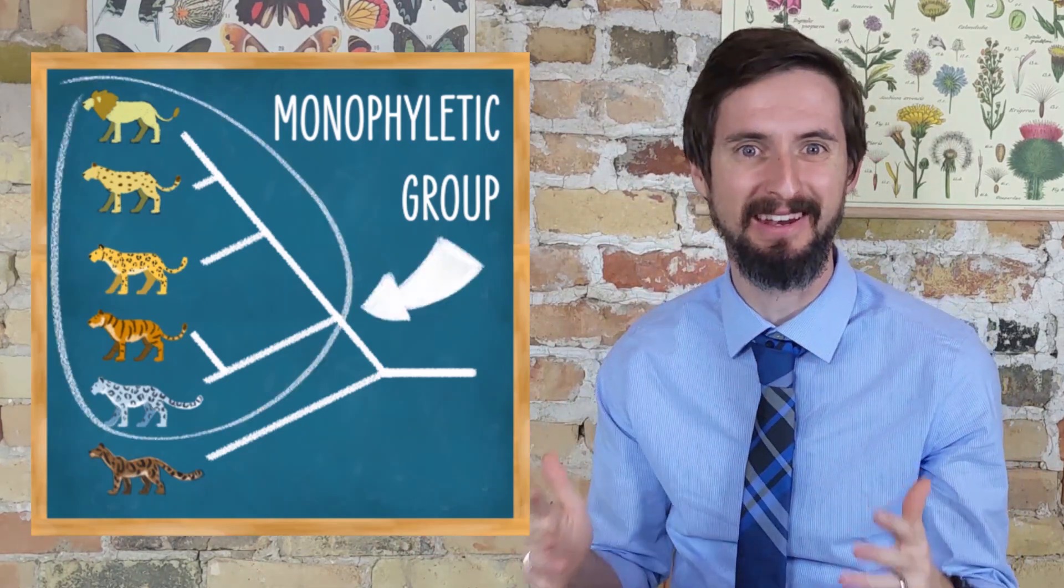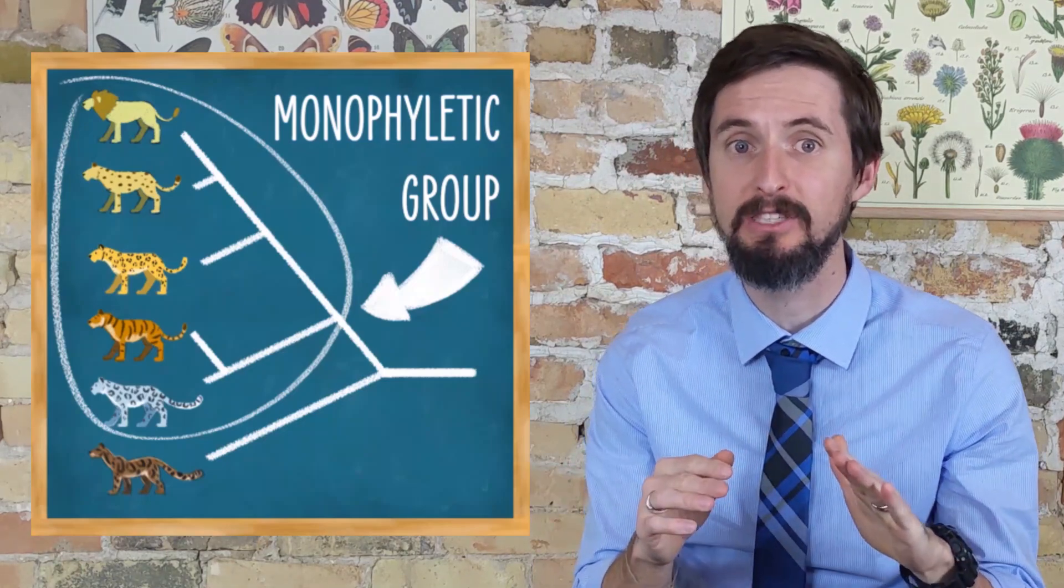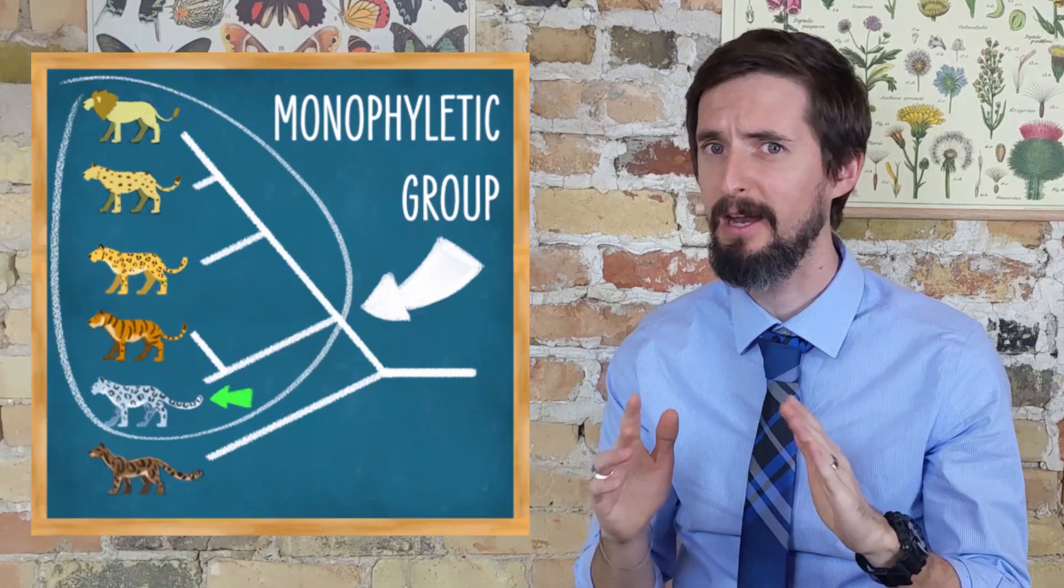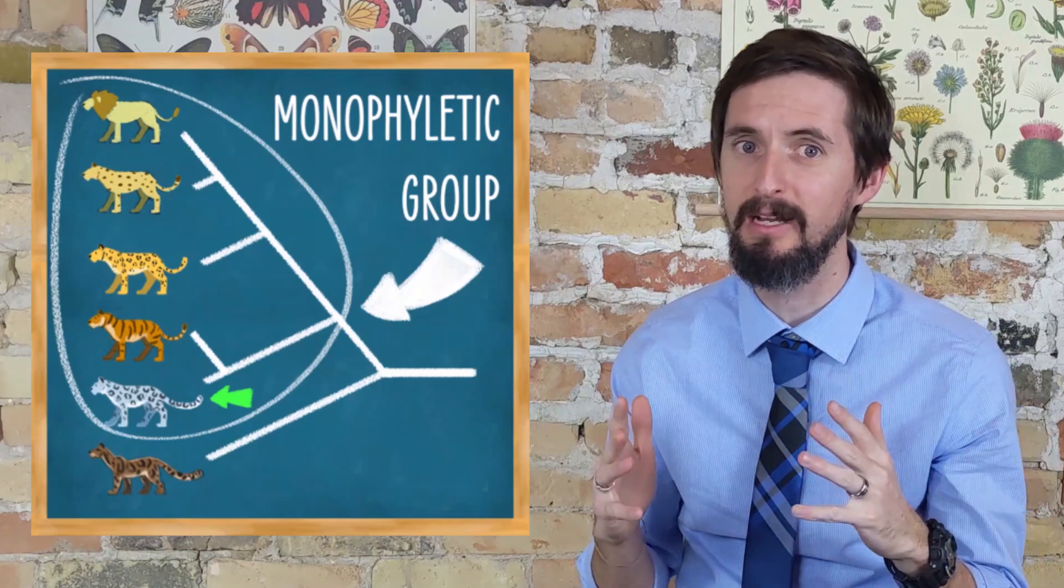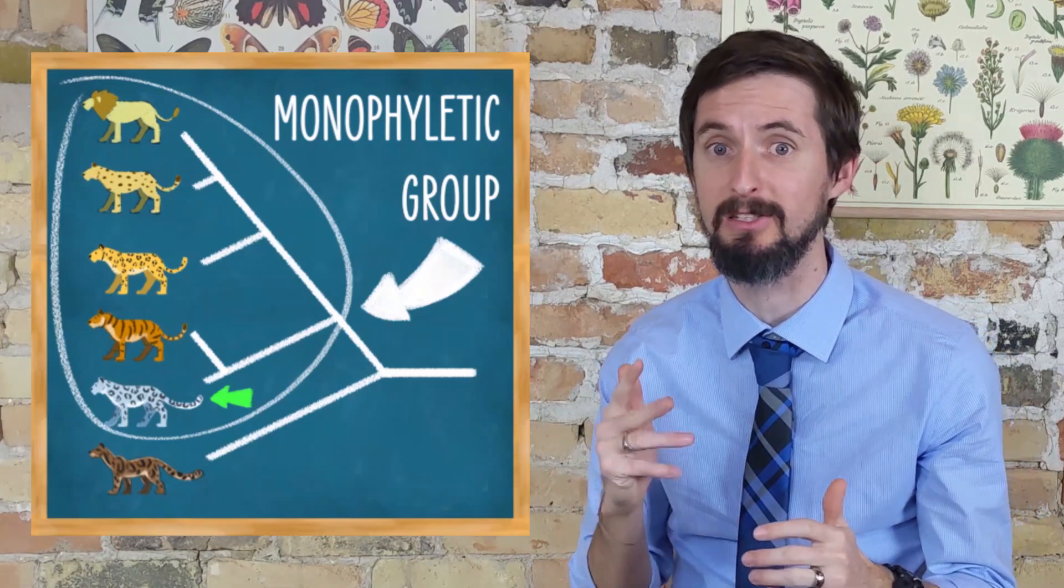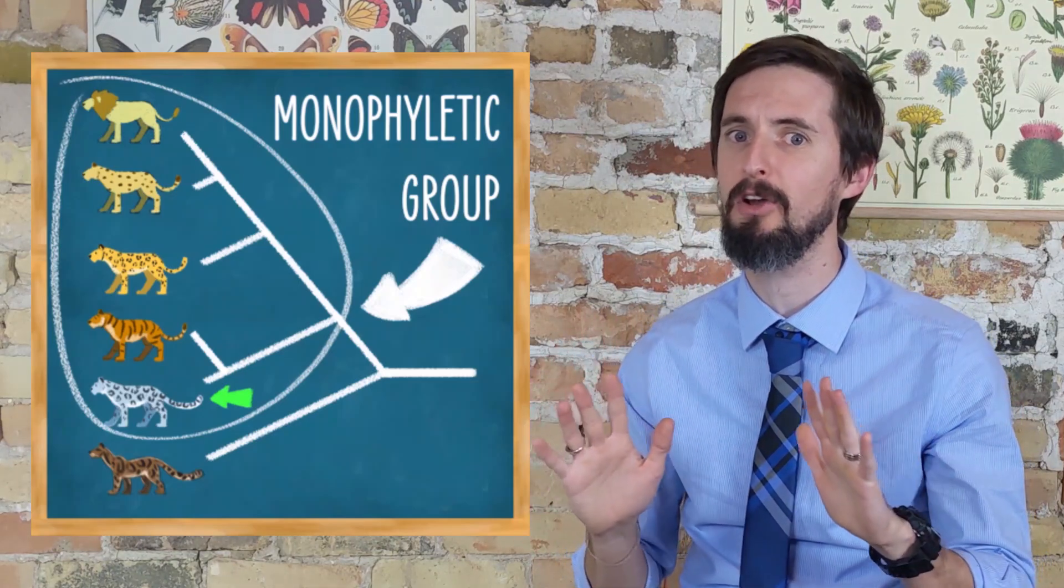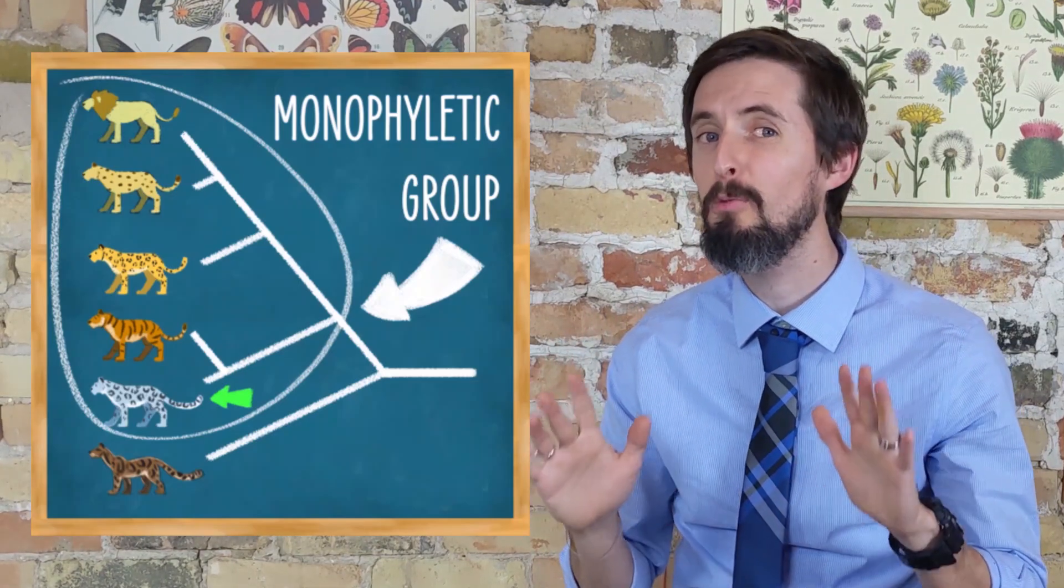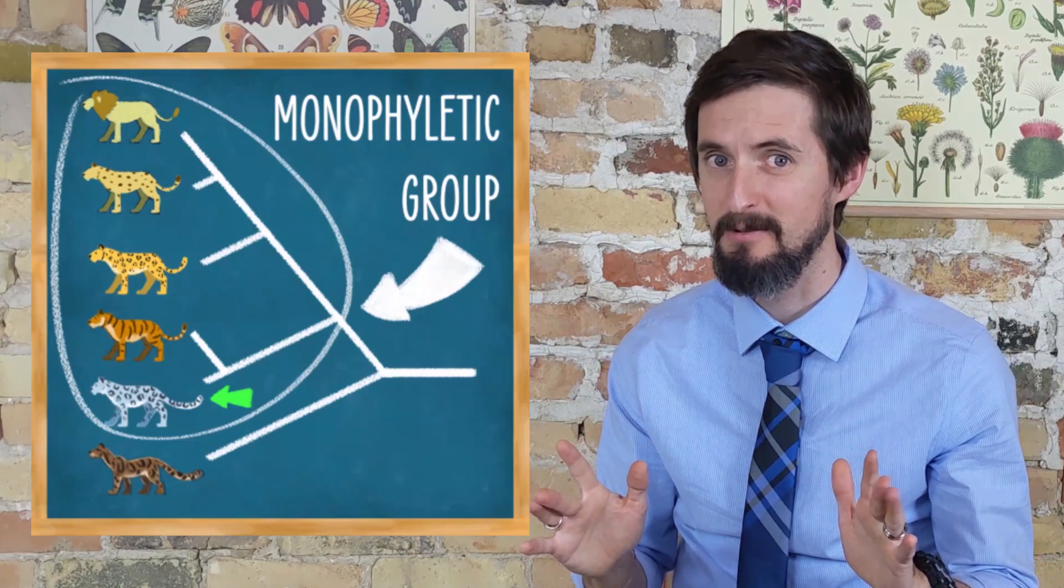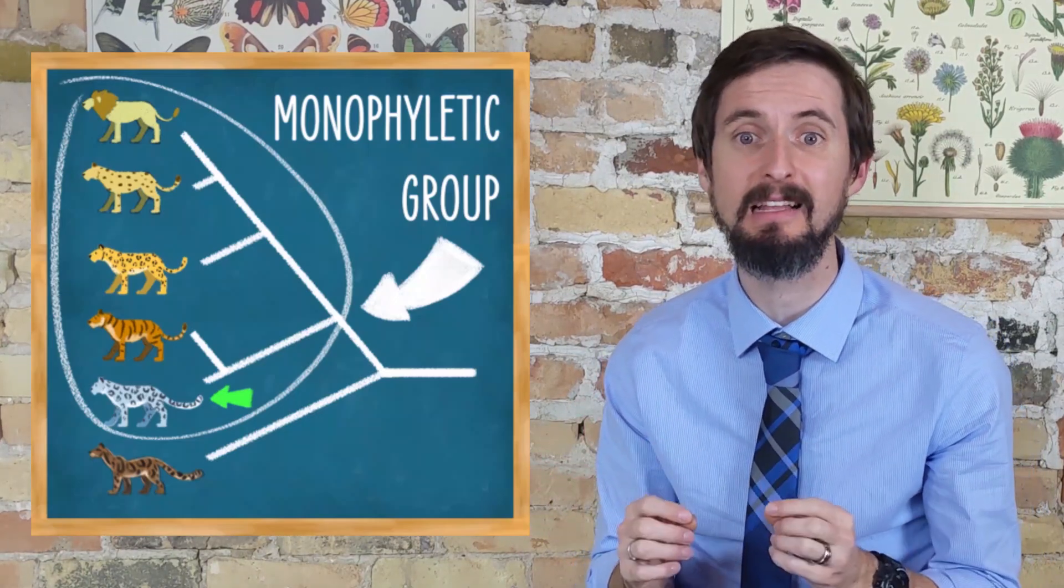And the thing is that if I had never seen a snow leopard before, but I knew its location on the phylogenetic tree, I would know that most of the things that tigers, jaguars, lions, and leopards have in common, which are probably inherited from their shared ancestors, also probably pertain to snow leopards. By understanding where they fit into the evolutionary tree of life, I suddenly know things about this animal that I didn't know before.